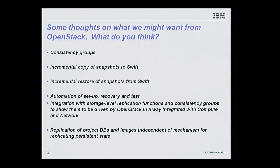Some thoughts on what we might want from OpenStack: first, consistency groups in OpenStack — the ability to define a set of volumes and make a consistent snapshot of that entire set, whether attached to one VM or multiple VMs, achieving power-fail consistency across that collection of snapshots. Second, incremental copy of snapshots to Swift — rather than backing up an entire volume, just copying what's changed since the last backup, perhaps as a delta object. This would greatly improve RPO by enabling much more frequent snapshotting and Swift backups.